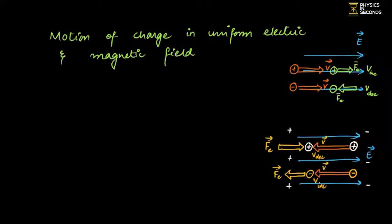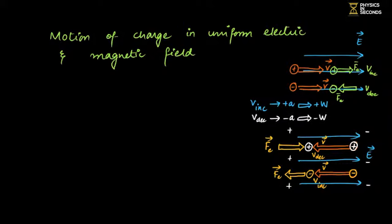Remember these cases — they are commonly asked: positive charge along field, positive charge against field, negative charge along field, negative charge against field. If velocity increases: positive acceleration, positive work done. If velocity decreases: negative acceleration (retardation), negative work done. All these examples involved only the electric field — no magnetic field.